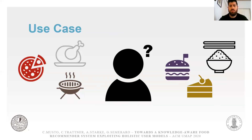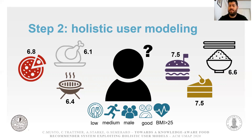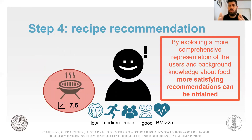Here is a simple use case with a set of available recipes for the user. We first calculate popularity-based scores. Next, we create the holistic user model — in particular, the user is overweight. We then exploit this information to re-rank all available recipes by activating the relevant rules. Given that the user is overweight, the knowledge-aware part lowers the score of unhealthy recipes and increases the scores of recipes that are suitable, such as a barbecue recipe. This allows us to provide recommendations that are more satisfying because they are based on a larger and more comprehensive set of user features.